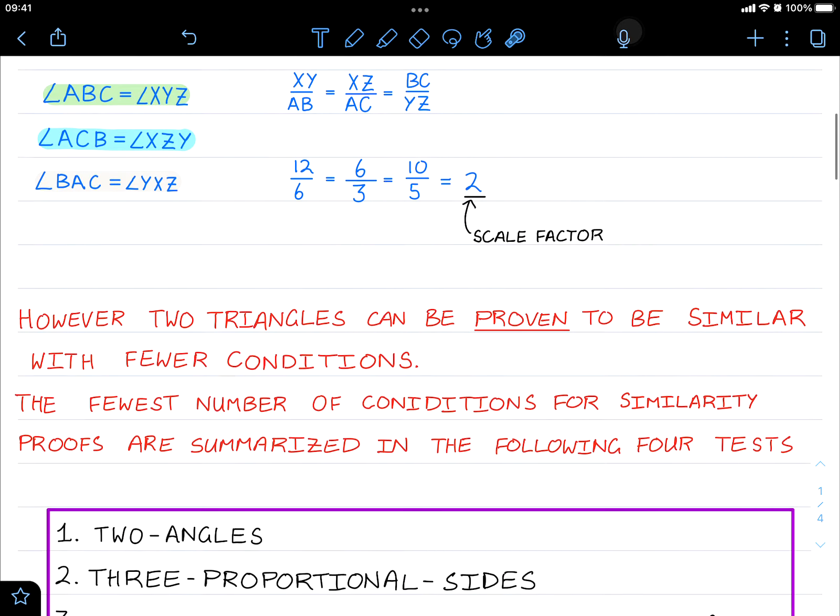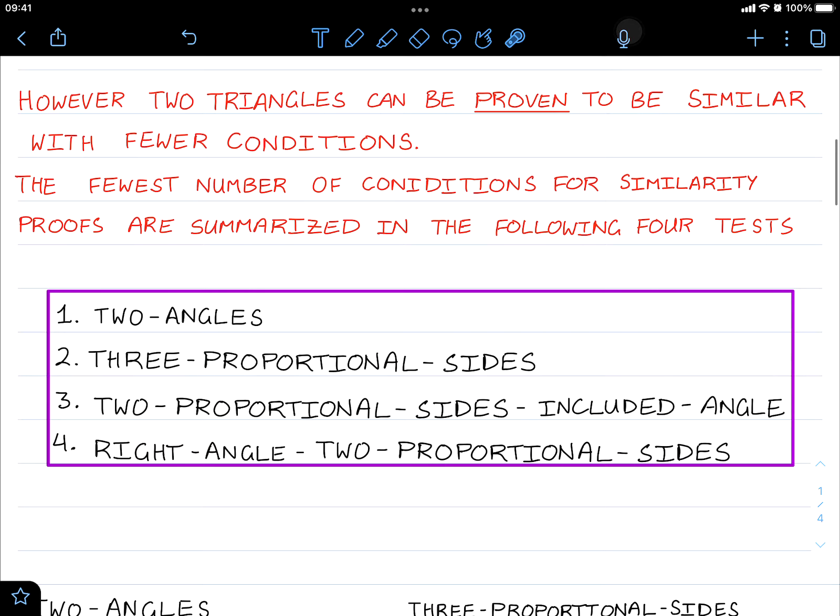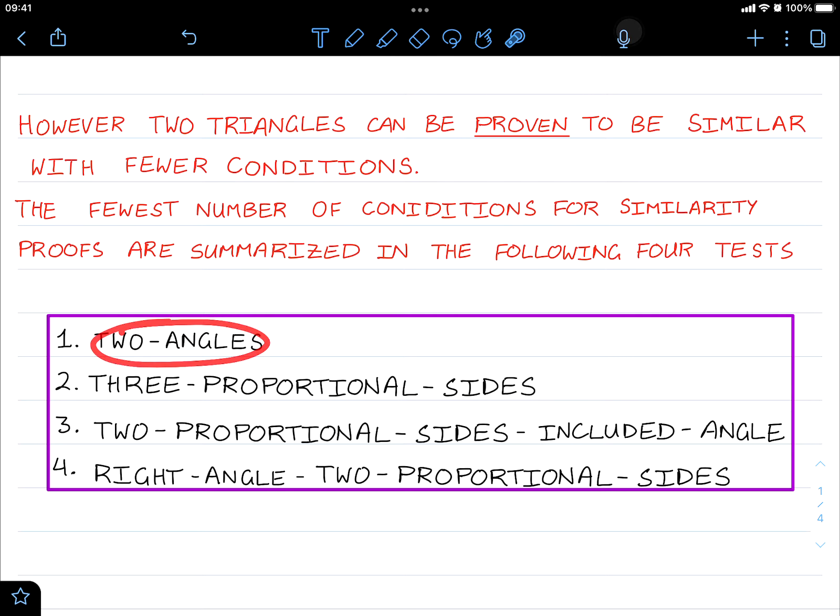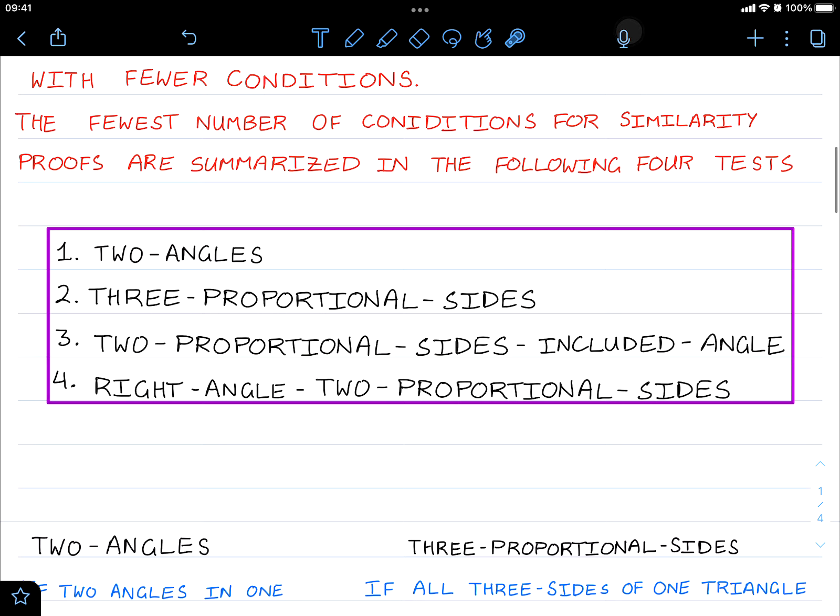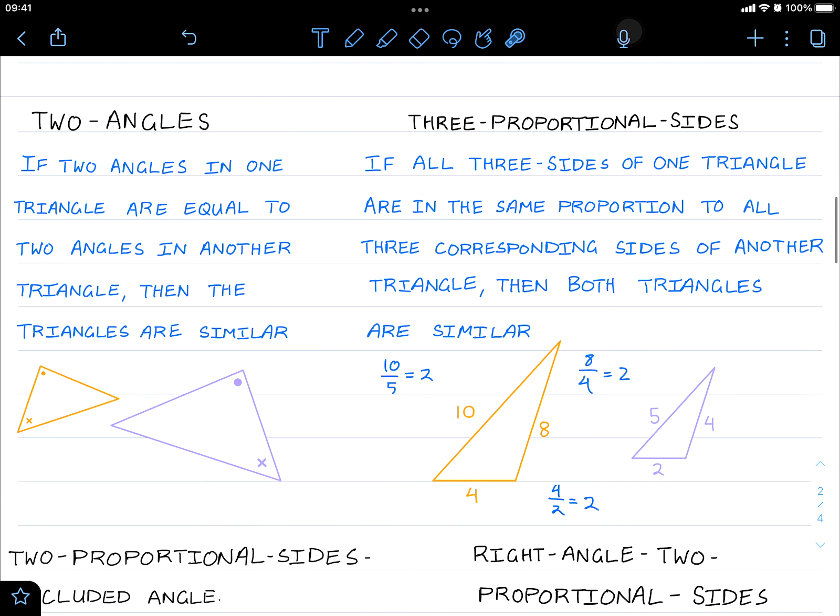However, two triangles can be proven to be similar with fewer conditions. The fewest number of conditions for similarity proofs are summarized in the following four tests: two angles, three proportional sides, two proportional sides and an included angle, right angle and two proportional sides. So let's take a look at these in detail.